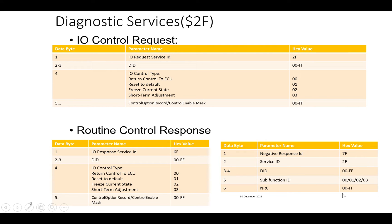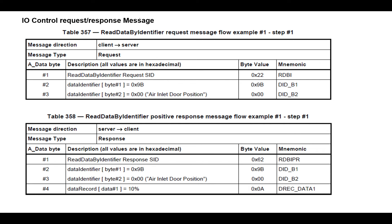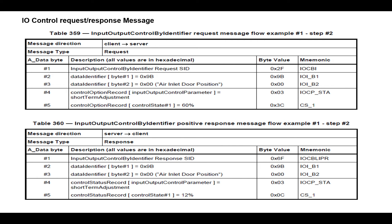As an example, consider DID 0x9B00 for air inlet door position. A read request 0x22 followed by 0x9B00 shows the current value is 0x0A. To change it to 60% (0x3C) using short-term adjustment, the request is 0x2F, 0x9B00, sub-function 0x03, value 0x3C. The positive response is 0x6F, 0x9B00, sub-function 0x03, and the control status record showing the updated value.